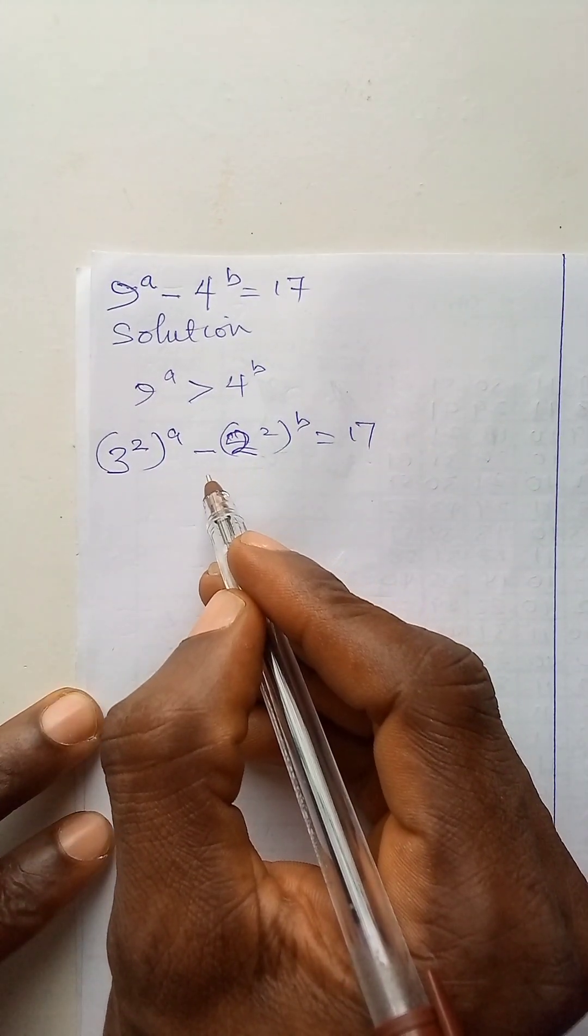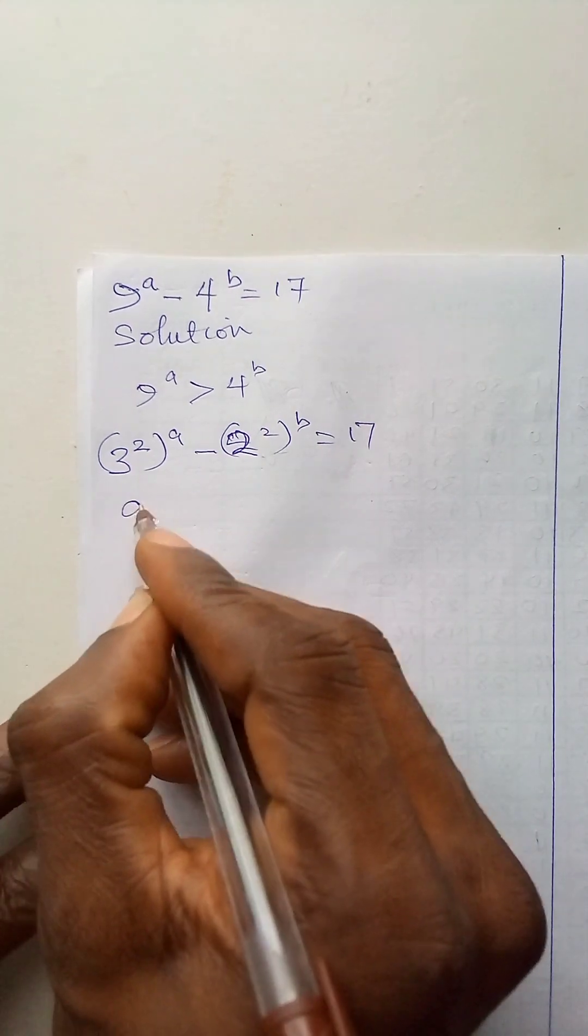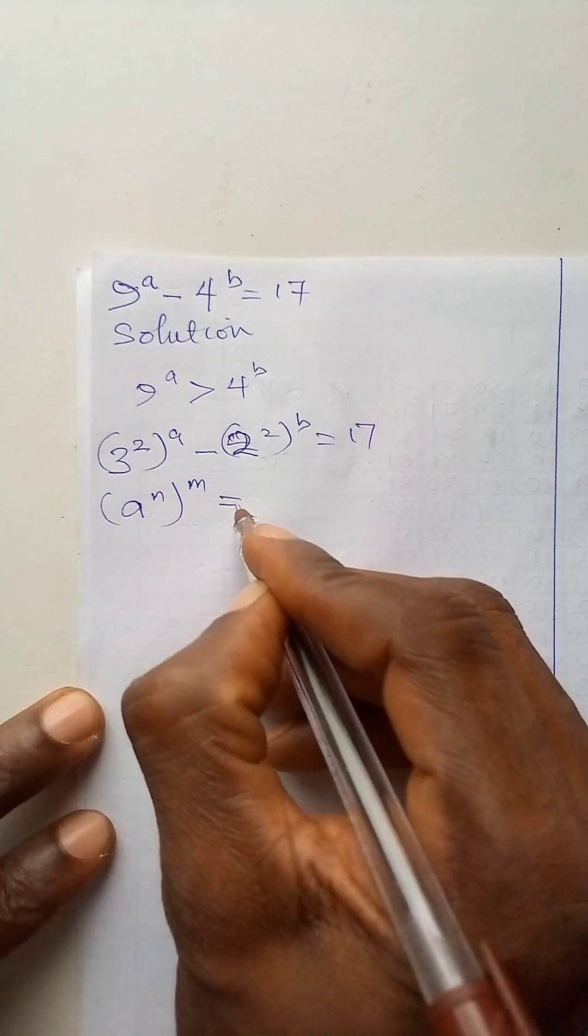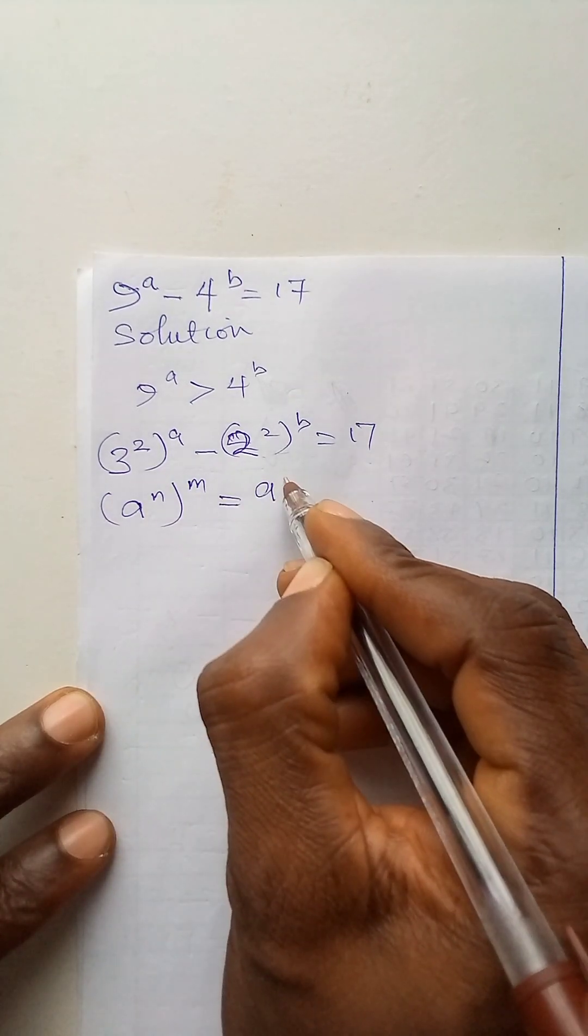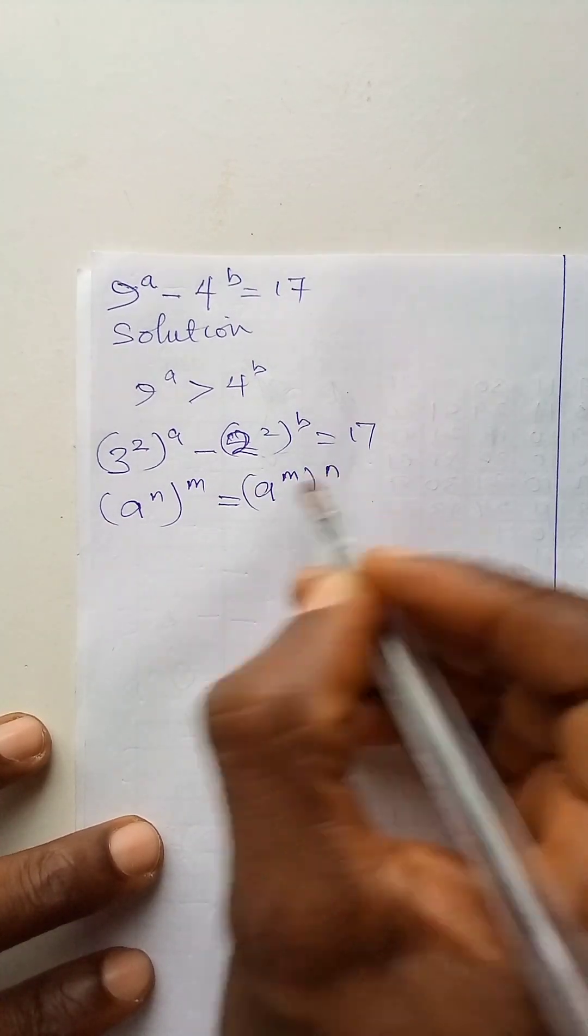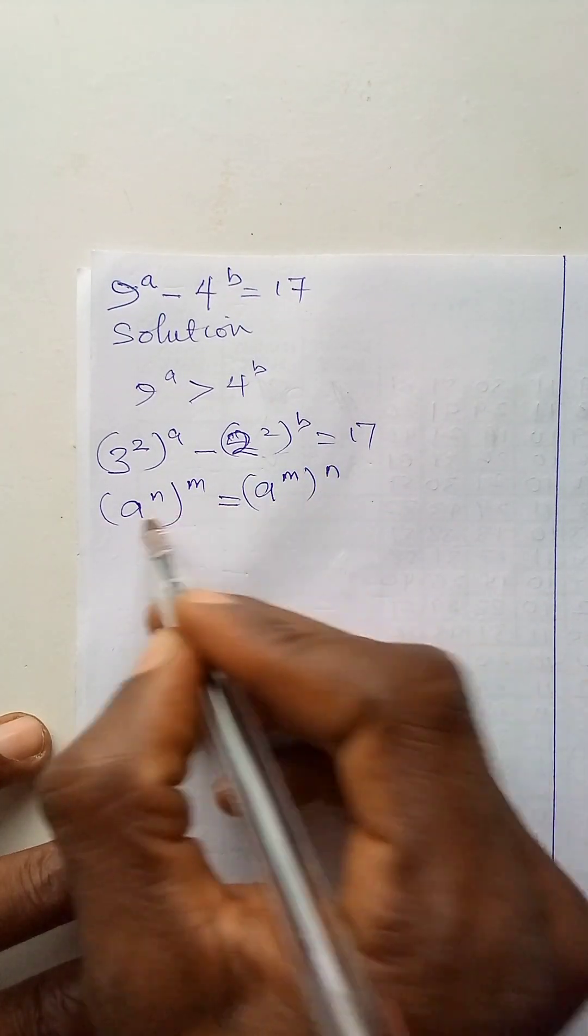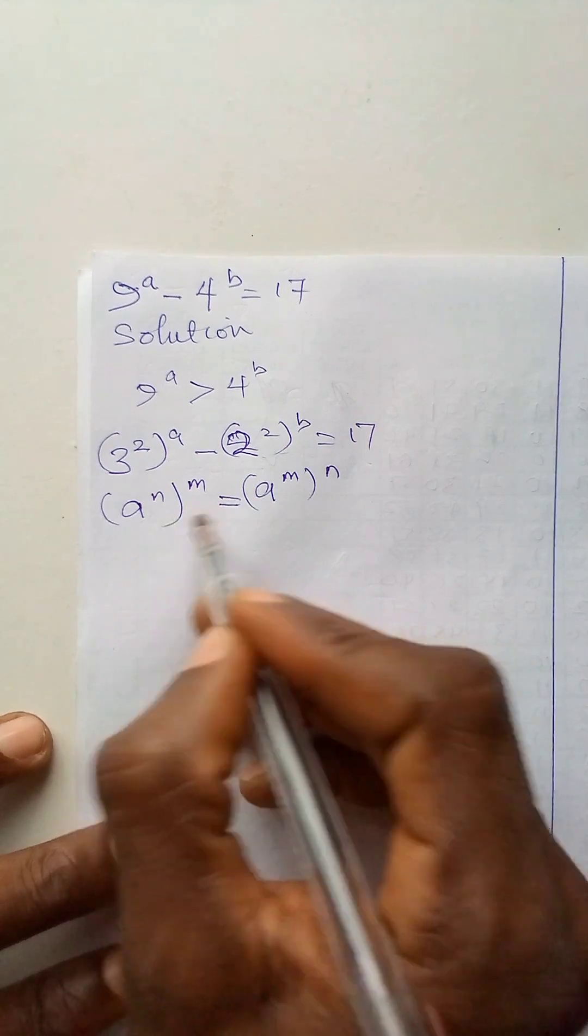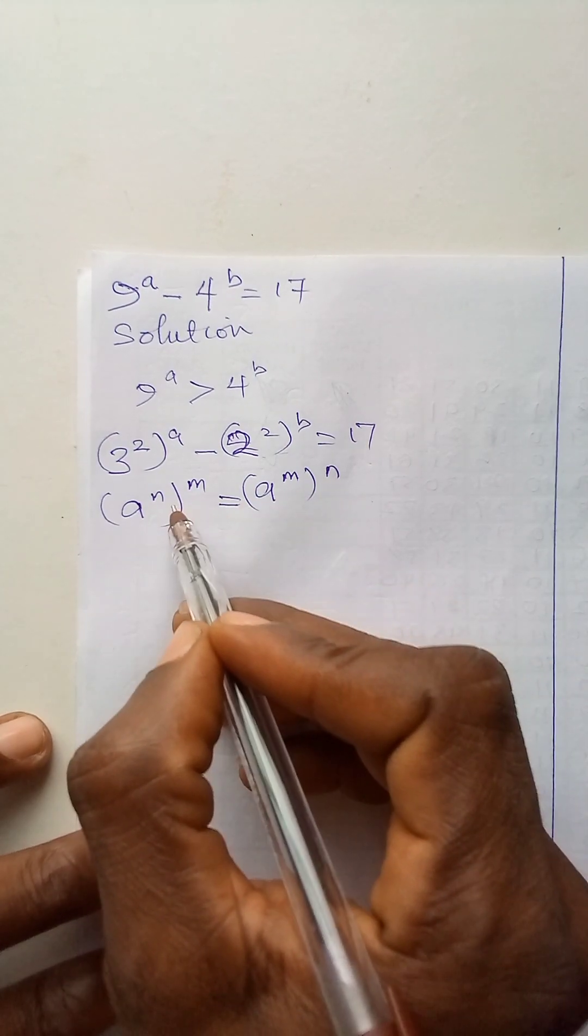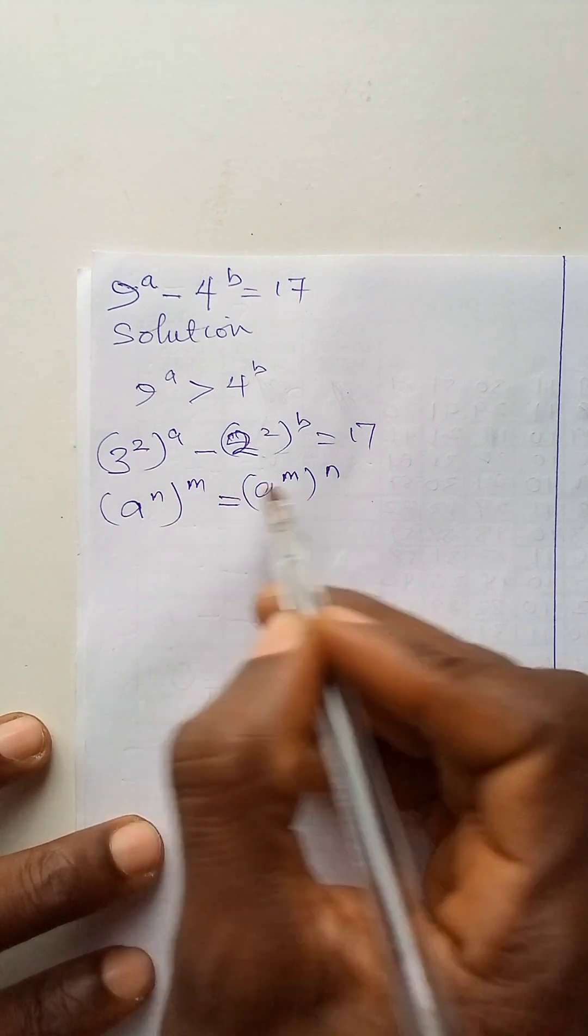If we remember, there is a law in indices that says a to power n bracket to power m is the same thing as a to power m to power n. Or rather, this multiplication is commutative. Yes, multiplication is commutative, and that is why I can interchange these numbers.